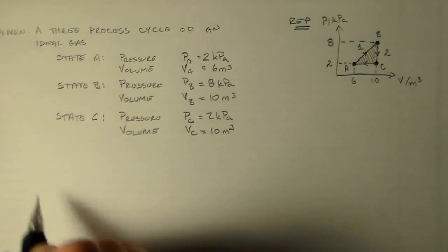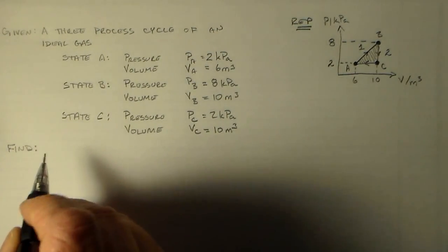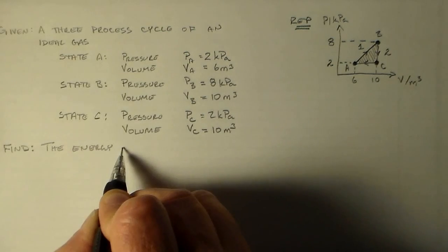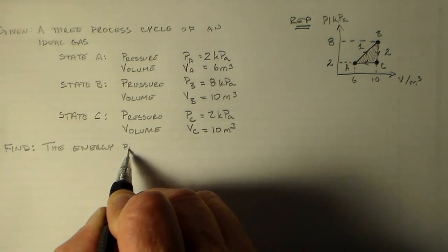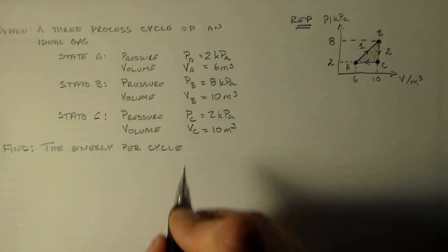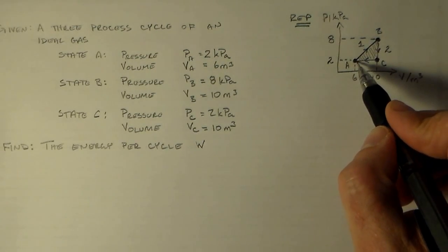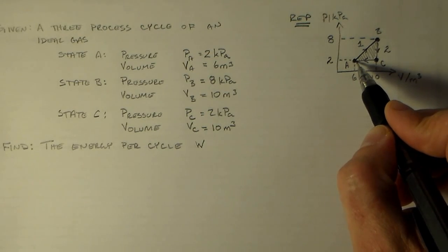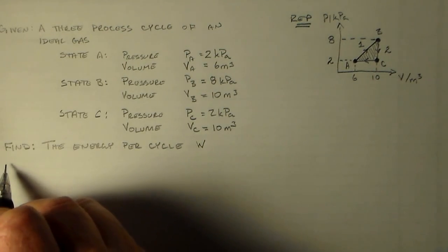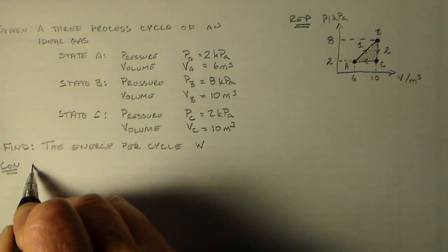And what do we want to find? I'm going to find the energy per cycle, W. So delta E has to be equal to zero, right, because it comes back to the same spot. But energy is used in the cycle. So our concept is a thermodynamic cycle.